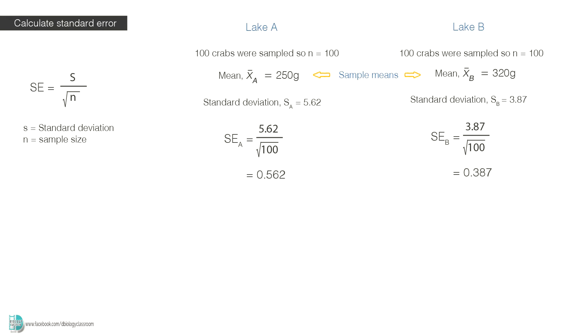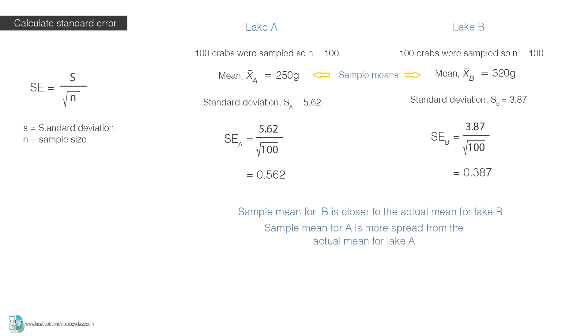When you compare the two standard errors, the mean for sample B is closer to the actual mean for lake B, while the mean for sample A is more spread from the actual mean of lake A. So the sample mean for B is more reliable compared to A.